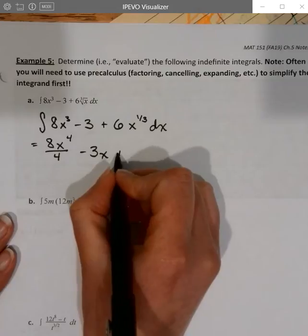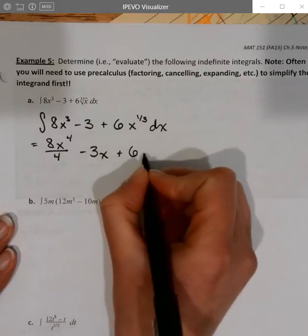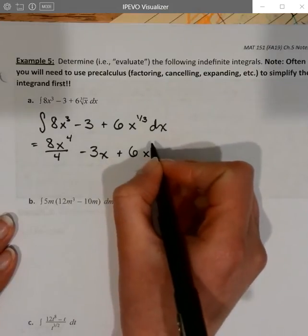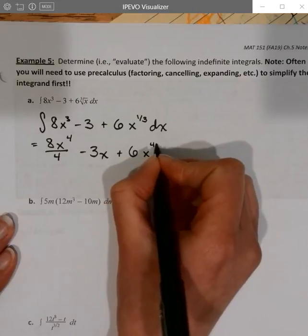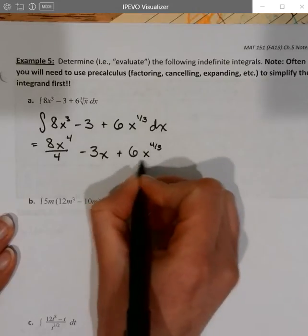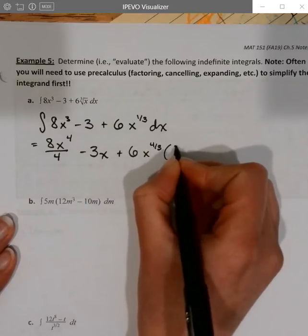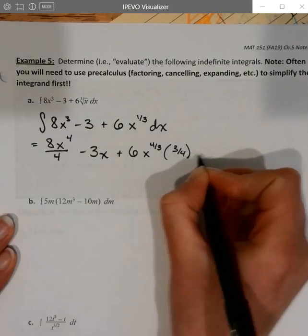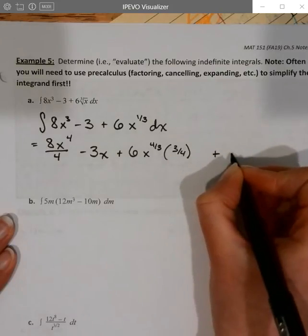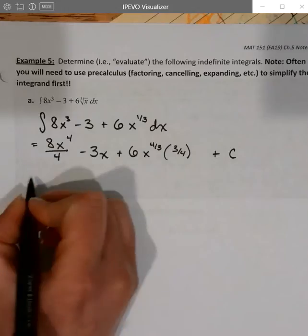And then the power rule again, this is going to be 6x to the, if I add 1, that's going to become 4 3rds. And instead of dividing by 4 3rds, we're going to multiply by its reciprocal, same thing, 3 4ths, and then plus our c, clean things up.